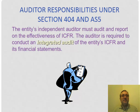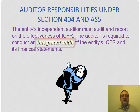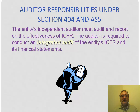The auditor's responsibility under Section 404 and AS5 is to audit and report on the effectiveness of the internal controls over financial reporting. The auditor is required to conduct an integrated audit of the entity's internal controls and the financial statements. The word 'integrated' reflects that within the financial statement audit, we already conduct an assessment of internal controls to identify the risk of material misstatement — this integrated audit expands that assessment but is not entirely different from it.